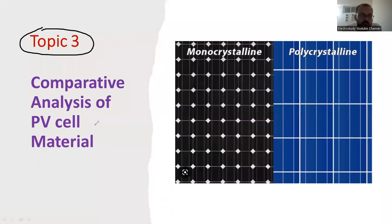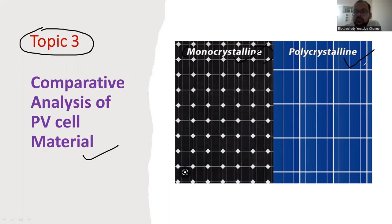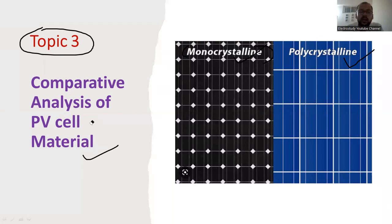Moving on to the third topic — also quite interesting: comparative analysis of PV cell material. There are different types of PV cell materials. It is a semiconductor material; PV cells can be made of silicon-type material. There are different combinations like monocrystalline, polycrystalline, multi-crystalline, and thin film type materials. You should have a detailed study about the different types of materials and compare them with cost, efficiency, cost-to-weight ratio, and other parameters. You can also create a review paper based on this.